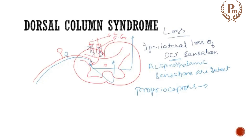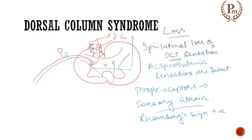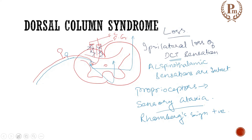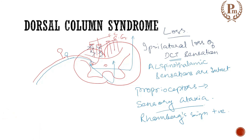We know that the dorsal column tract carries signals from the proprioceptors. Since these dorsal column tract fibers are now damaged, there will be sensory ataxia. In sensory ataxia, if you ask for a Romberg sign, it will be positive. These are the manifestations when there is a unilateral damage to the dorsal column tract.